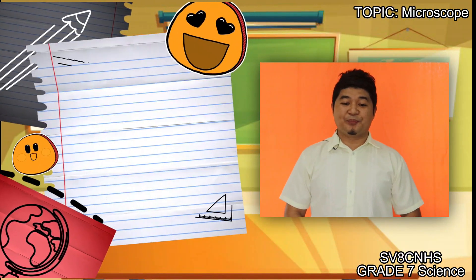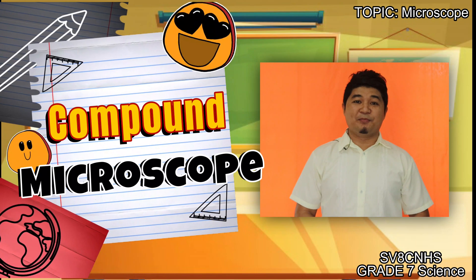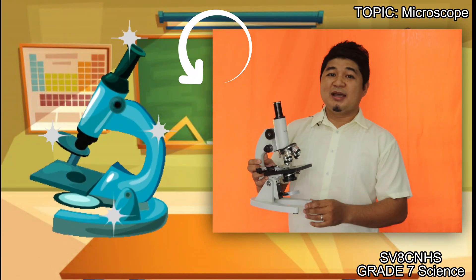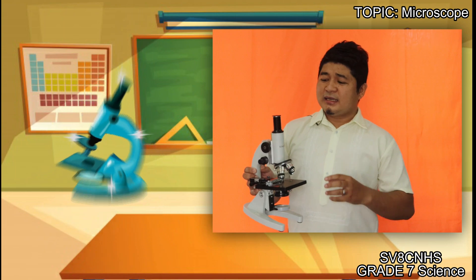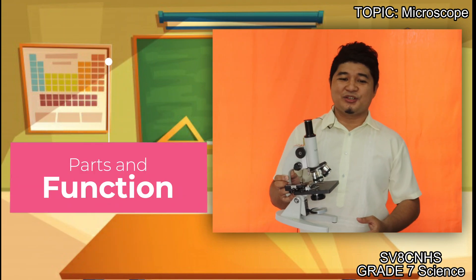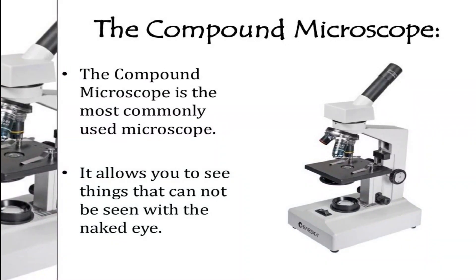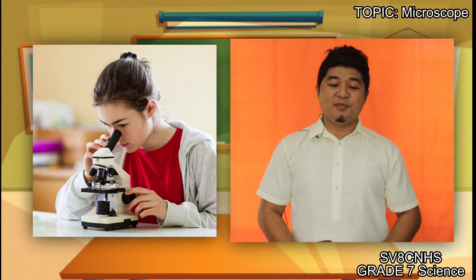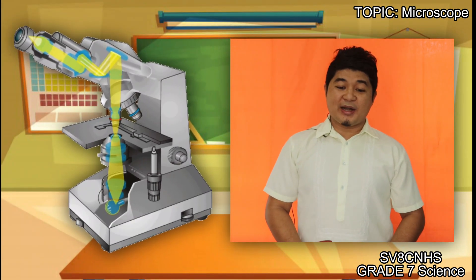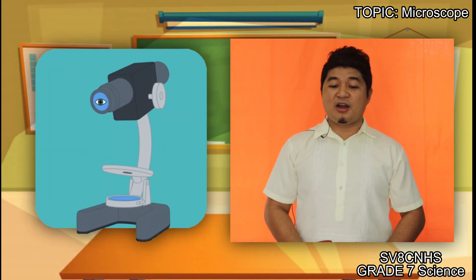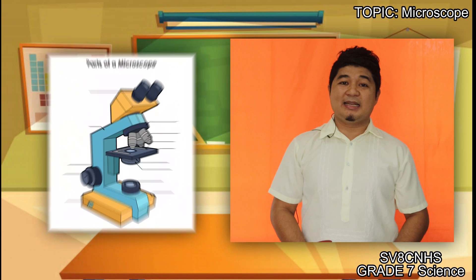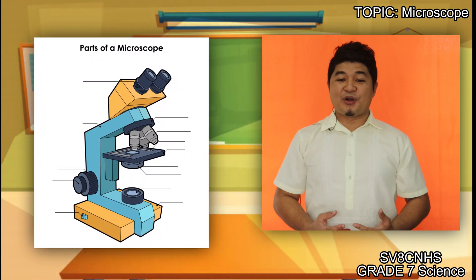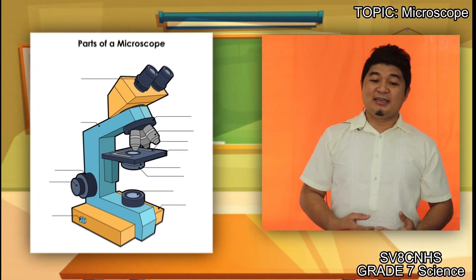The most common type of microscope is what we call a compound microscope. Here is an example of a compound microscope. Later on, class, we will discuss its different parts and functions. The word compound is used because in order to magnify an image, a path of light from the source will pass through different lenses, where each lens enlarges the image formed by the previous lenses. Now that we know the microscope, it is time for us to identify its parts and functions.